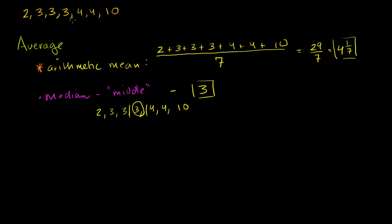Now, just to be clear, it was very clear what the middle number was because I had an odd number of numbers. I have 3 on each side of the 3, so it was very easy to figure out the median, the middle number.